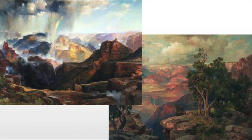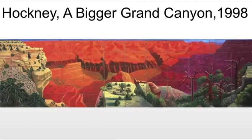Unfazed by this precedent and directly inspired by Moran's 19th century view, and intrigued to see how another artist grappled with representing the same vast heroic space, Hockney produced a Bigger Grand Canyon, which is even larger than Moran's canvases. Here we have a series of 60 small canvases joined together to create one large view representing just a portion of the canyon.